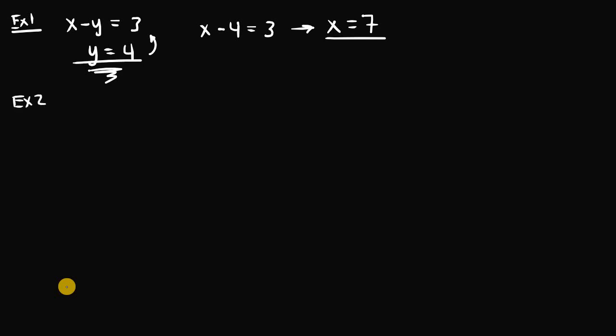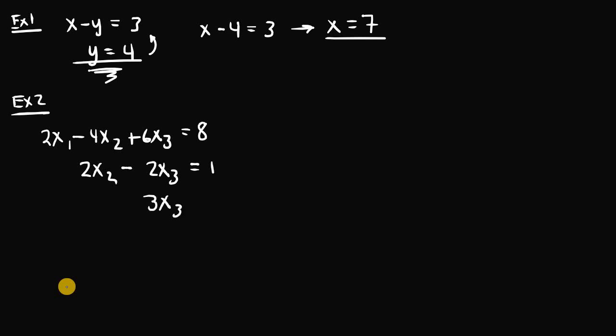Let's go on to example two, which is going to be a little bit more challenging. We have a system of linear equations: 2x1 minus 4x2 plus 6x3 is equal to eight, the second equation is 2x2 minus 2x3 is equal to one, and the last equation is 3x3 is equal to nine. This sort of looks like it's in row echelon form — you have this diagonal — but there are no leading ones.